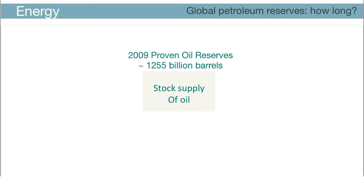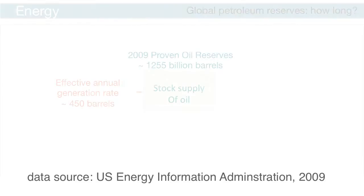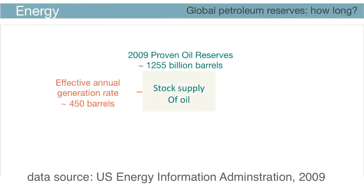Let's consider the picture of fossil fuels, specifically oil. Fossil fuels ultimately represent the captured energy stored from the Sun in the form of plants, concentrated over millions of years under pressure and heat. These fuels have stored the energy in the chemical bonds of hydrocarbons. An effective generation rate for fossil fuels is on the order of about 450 barrels per year.